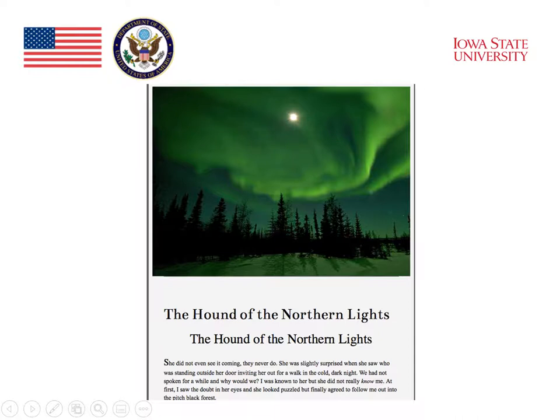Innovation in the stories took several forms. There were several set in Sweden, including one called The Hound of the Northern Lights, which was a retelling of the Sherlock Holmes mystery The Hound of the Baskervilles but set in northern Sweden. Students collaborated to find a way to Swedishify the story, changing characters' names — for example, the Baskervilles became the Baskerstroms — but also imagining ways two Englishmen like Sherlock Holmes and John Watson would make sense of Swedish customs and behavior as they went about solving a mystery far north inside the Arctic Circle.